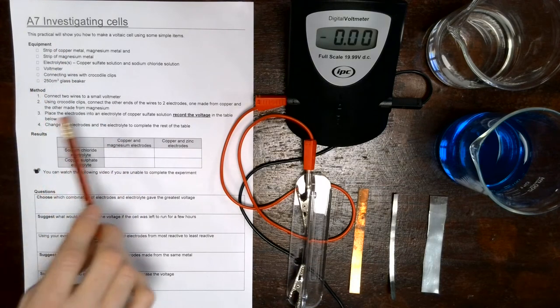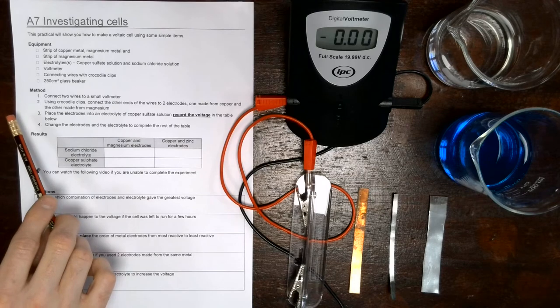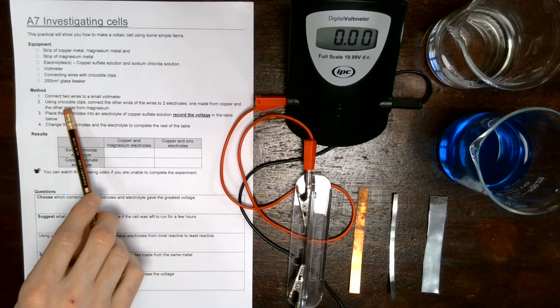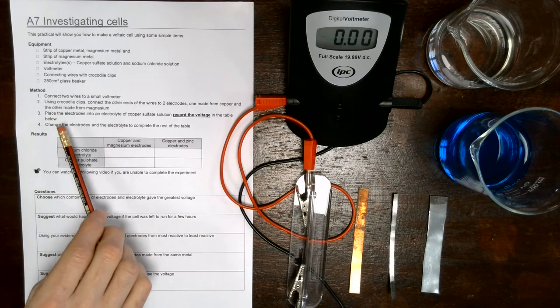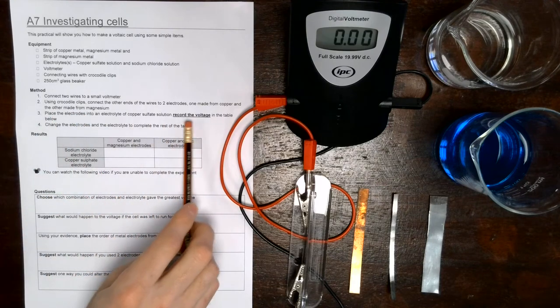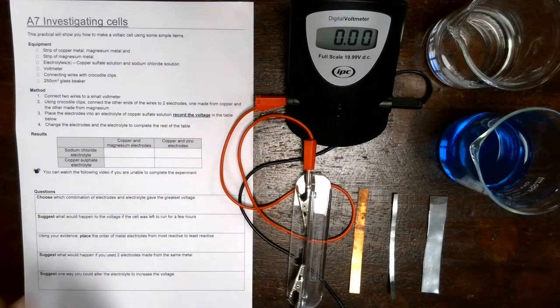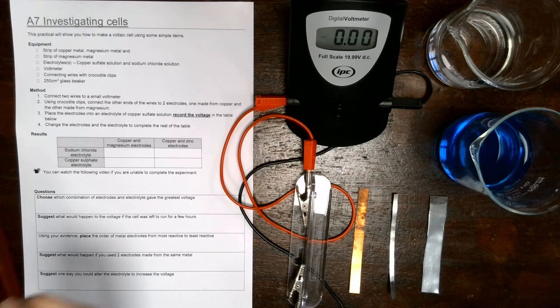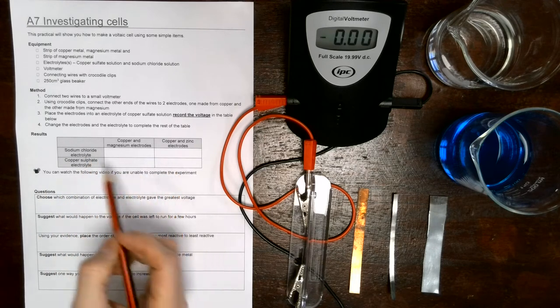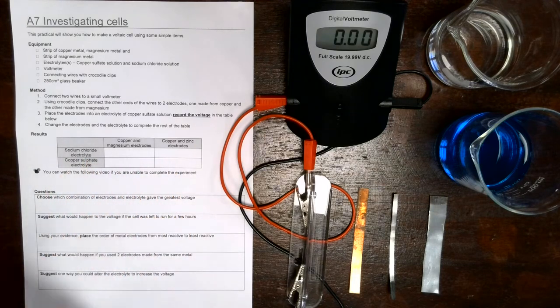Once we've gone through the list of equipment, let's have a quick look at the method. So we're going to choose two different metals, connect them to the crocodile clips, and then place them into one of the electrolytes and record the voltage that's going to be displayed here on the voltmeter. All we need to do is complete the table by matching the electrolyte with the different types of electrodes. So let's get started.